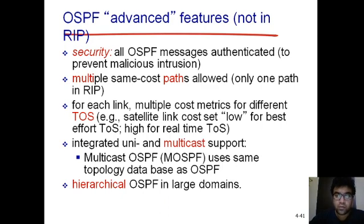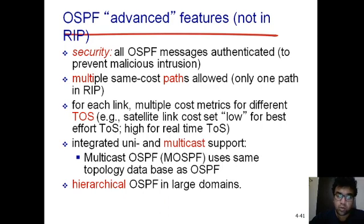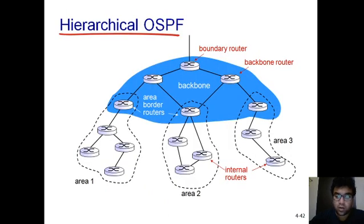OSPF provides unicast as well as multicast support. It uses a hierarchical approach for large domains - if your autonomous system has a very high number of routers, it uses hierarchical OSPF protocol. This is one of the advantages: it's not restricted to only 15 hops and can be used with any number of routers. Let's see how large networks are managed in this routing protocol.